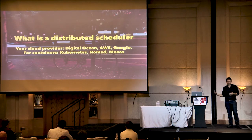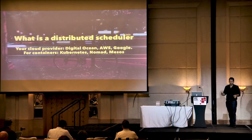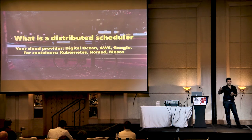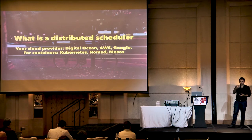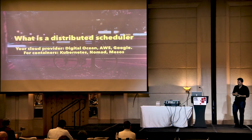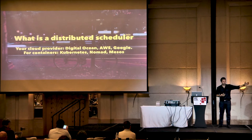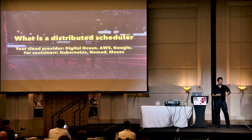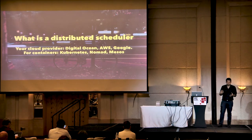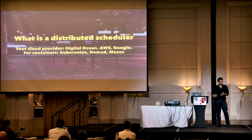When you use the cloud, you think you're just getting a virtual machine and it's all magical. But that virtual machine has to end up on some server in the cloud, and to do that, they have distributed schedulers that decide where your virtual machine is going to land. Most companies nowadays are slowly moving away from virtual machines and moving on to containers, so most of this talk will be focused on distributed schedulers for containers.